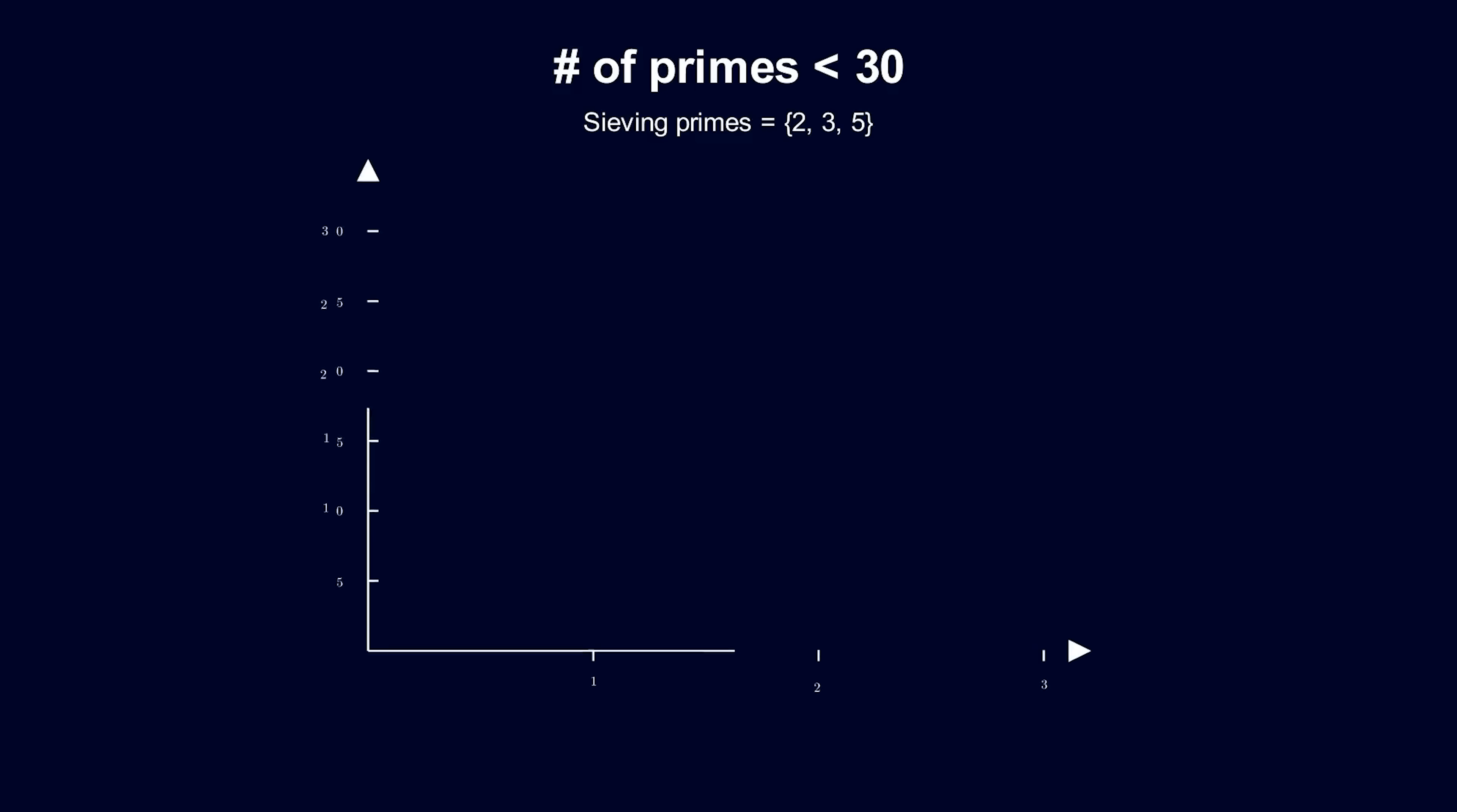Let's graph this. We crossed off 29 numbers, which are multiples of 1 prime. We added back 10 numbers, which are multiples of 2 primes. We subtracted one multiple of all 3 primes. The true number of primes less than 30 is 10. This process is called inclusion-exclusion. You first exclude the multiples of 1 prime, you include the multiples of 2 primes, you then exclude the multiples of 3 primes, and so on until you're done.